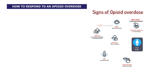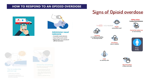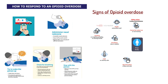What to do if you think someone is overdosing? It may be hard to tell whether a person is high or experiencing an overdose. If you aren't sure, treat it like an overdose — you could save a life. Call an ambulance immediately. Administer Naloxone if available. Try to keep the person awake and breathing. Lay the person on their side to prevent choking. Stay with the person until emergency assistance arrives.